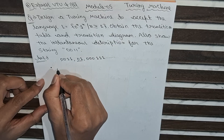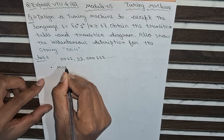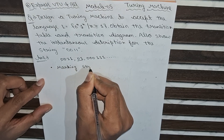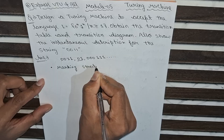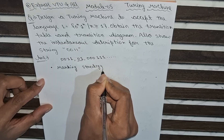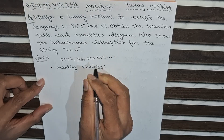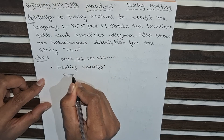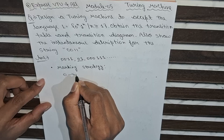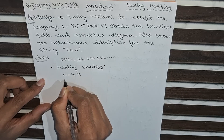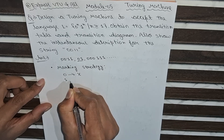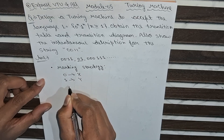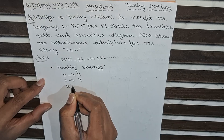Firstly I will draw the transition table, and I will follow the marking strategy. In this strategy we will convert 0 and make it to X, and from 1 we will convert it to Y, and there will be one blank symbol.